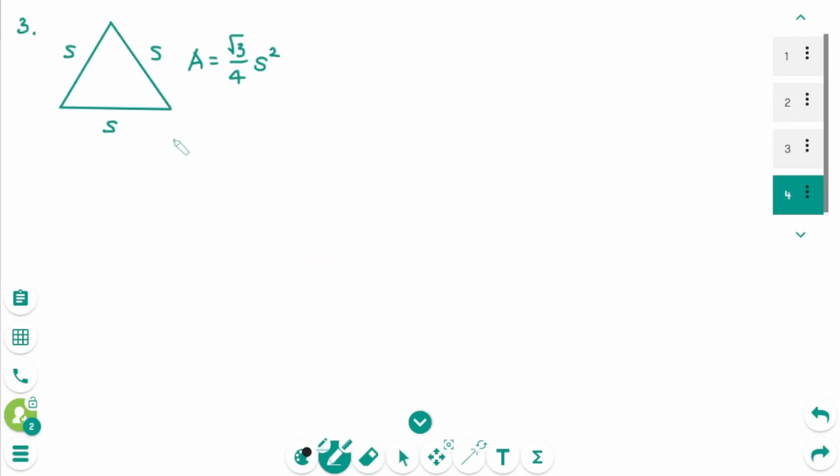Number 3. The formula to use when we know the side of an equilateral triangle is square root of 3 over 4 times side squared.